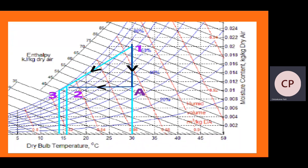We can split process 1→2 into two parts by extending point 1 vertically downward and point 2 horizontally to find intersection point A. Process 1→A involves a decrease in specific humidity, so it is a dehumidification process. Process A→2 involves a decrease in dry bulb temperature only, so it is a sensible cooling process.